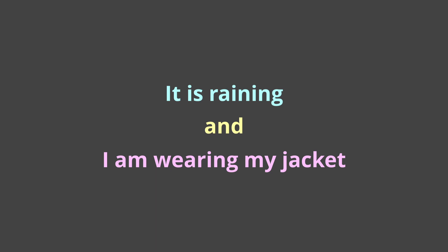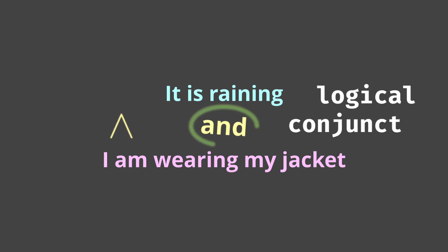In our natural language, we combine these together with an "and." So in our world of statements and truth values, we would like to have some kind of way to think about combining statements like this. We call this a logical conjunction, and it behaves the exact same way as our natural language equivalent.